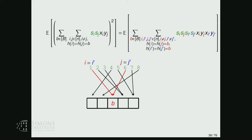After taking expectation, there is no B'. It's just a summation over B. Inside a given bucket there could be multiple coordinates colliding, so we sum over pairs I,J (distinct) and I',J' (distinct) that both hash into the same bucket.